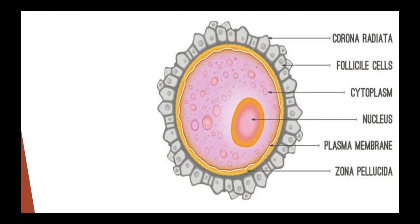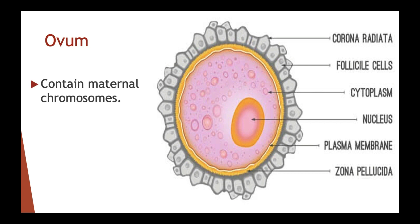The human ovum is a round cell which has 23 maternal chromosomes. It has a somewhat large cytoplasm and is surrounded by lots of supporting cells. There is also a clear layer present between the plasma membrane of the ovum and the supporting cells.